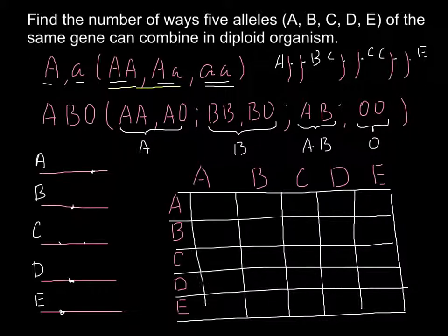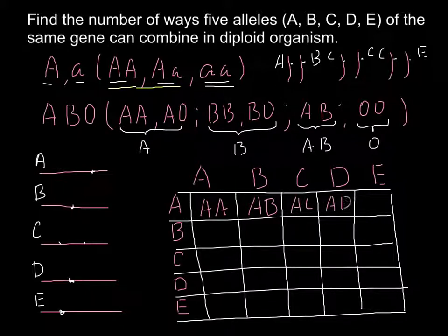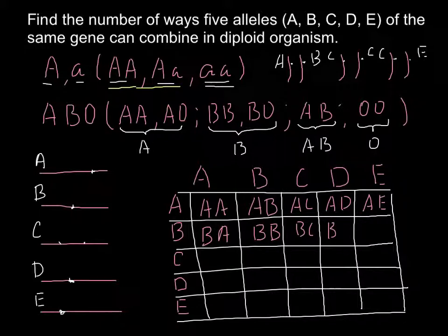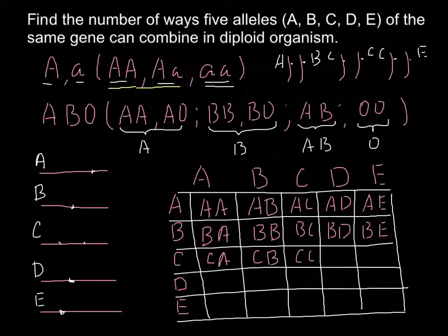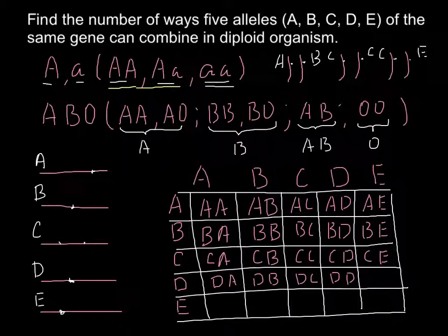Now I will explain. In the first row we would have AA, AB, AC, AD, and AE. In the second row we would have BA, BB, BC, BD, and BE. In the third row: CA, CB, CC, CD, and CE. Then DA, DB, DC, DD, DE. And finally EA, EB, EC, ED, EE. So we have 25 genotypes listed in the grid.